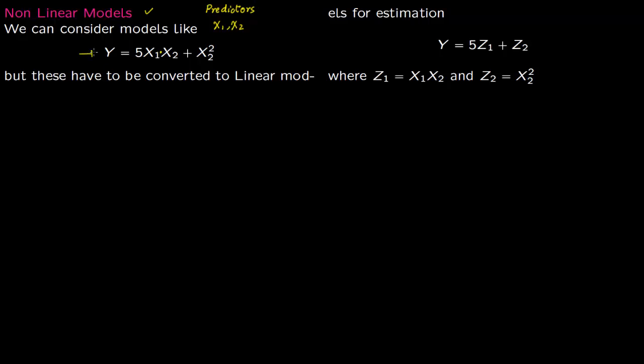And this Y is called response. But this has to be converted to a linear model for estimation. So what you do is you now write this as Y equals 5*Z1 plus Z2, where this Z1 is nothing but X1 times X2, and this Z2 is nothing but X2 squared. So we want some model like this.